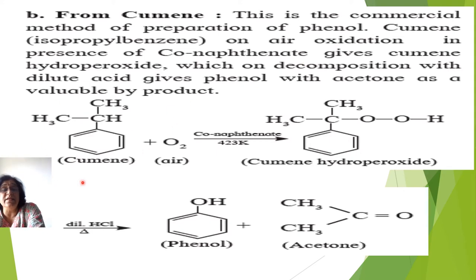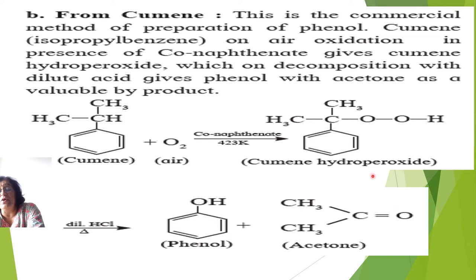To recap: cumene (isopropyl benzene) is reacted with air in presence of cobalt naphthenate at 423 Kelvin to give cumene hydroperoxide — oxygen gets incorporated between carbon and hydrogen. This is hydrolyzed with dilute HCl to give phenol and acetone. This is a very important commercial method of preparation of phenol.